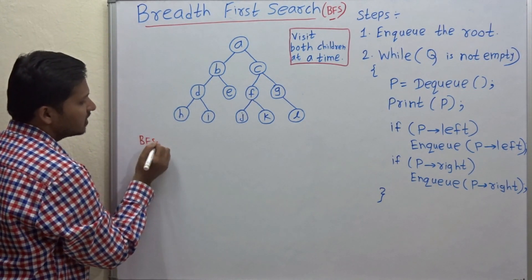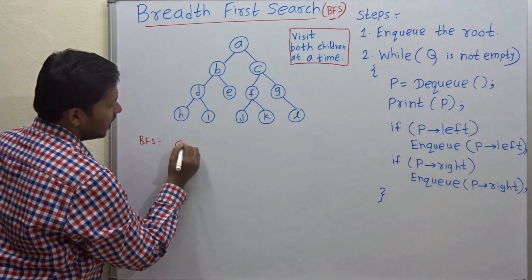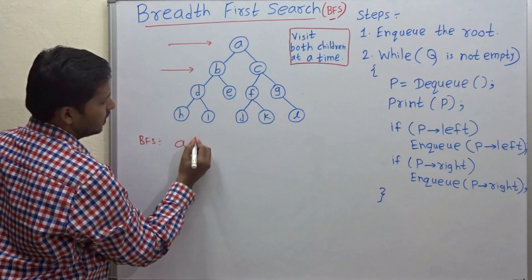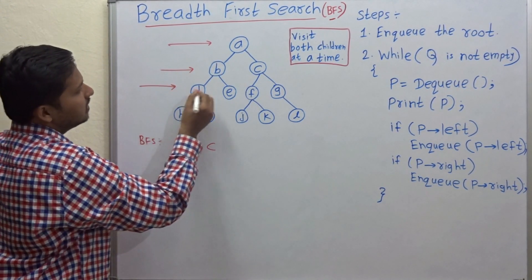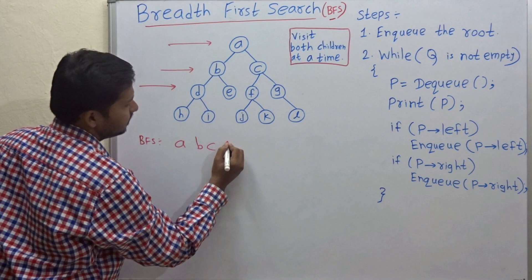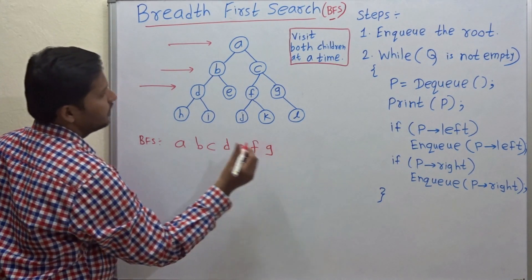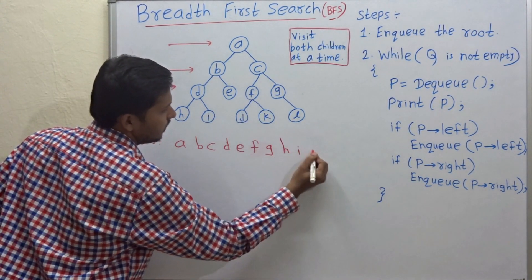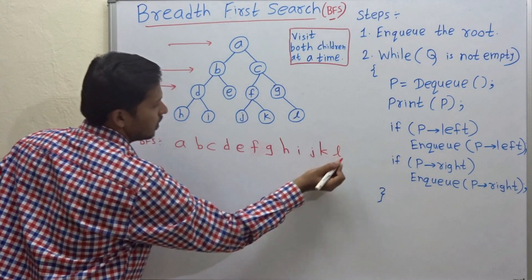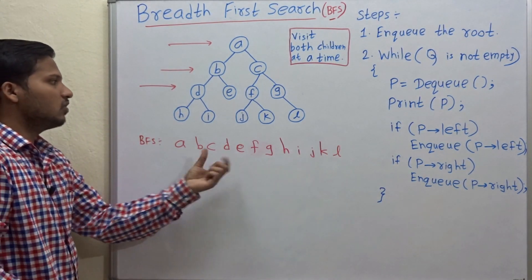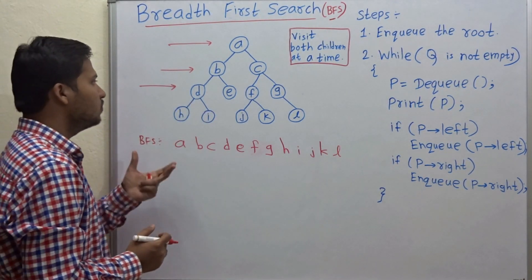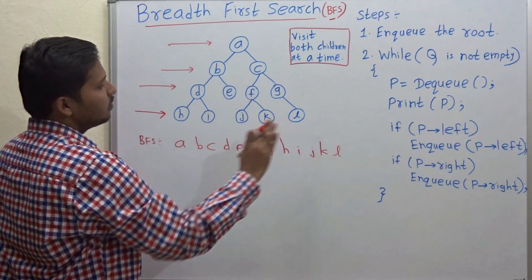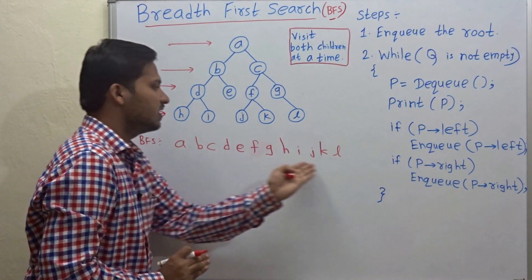BFS is similar to the level order traversal — you have to write each level of the binary tree. The BFS for this binary tree is: A (first level), then B, C (second level), then D, E, F, G, and H, I, J, K, L. This is the BFS of this binary tree — it represents each level in a single line.